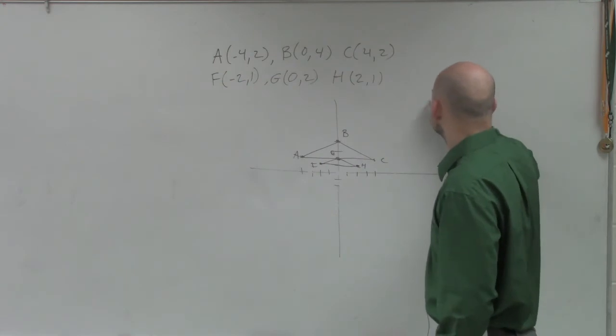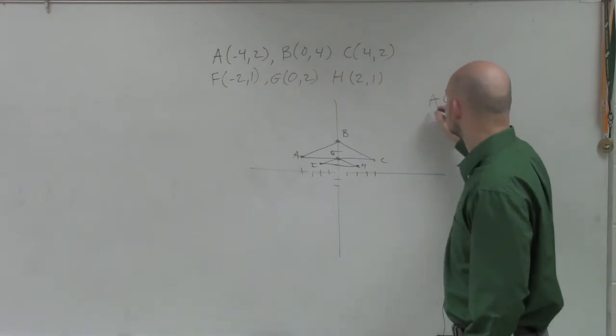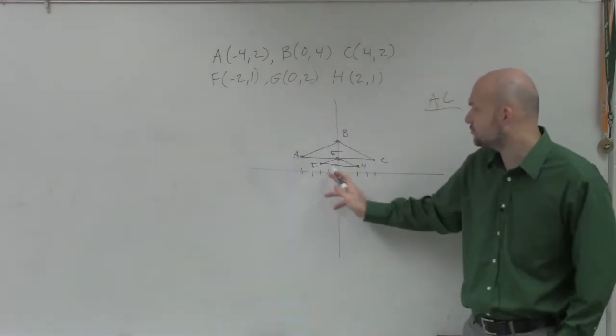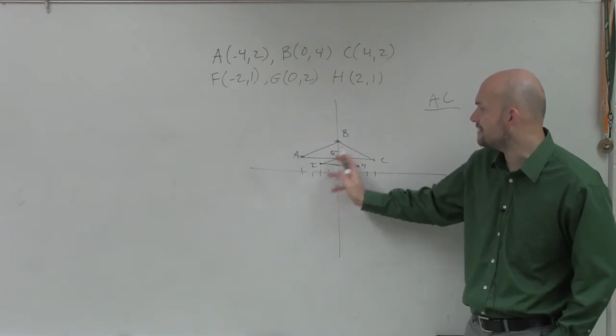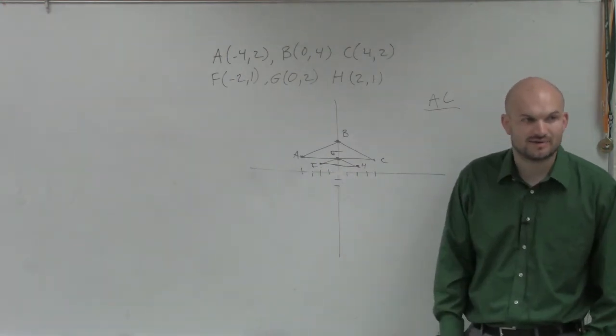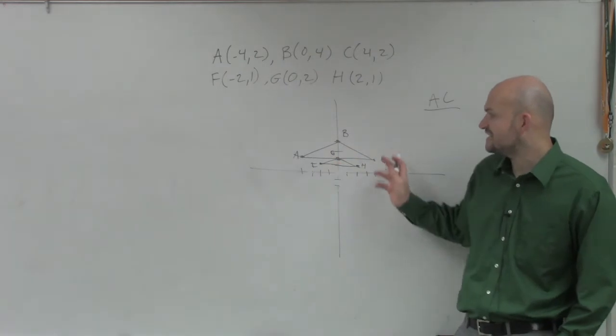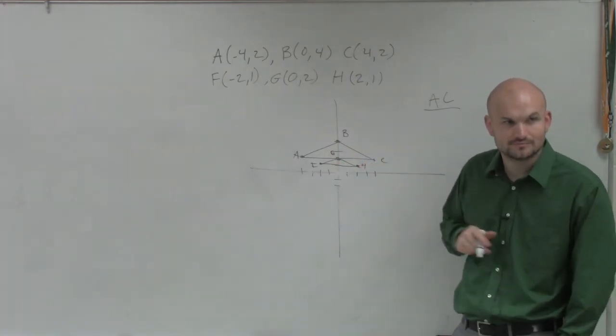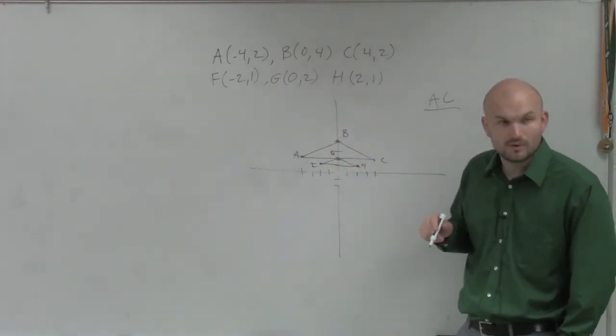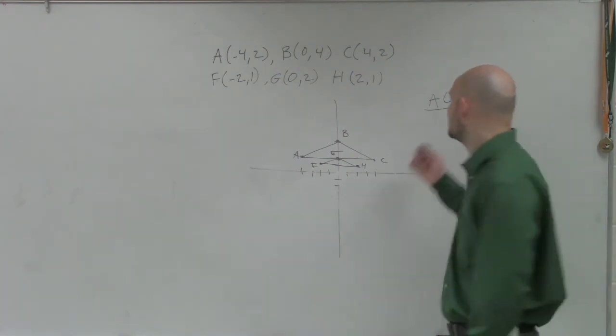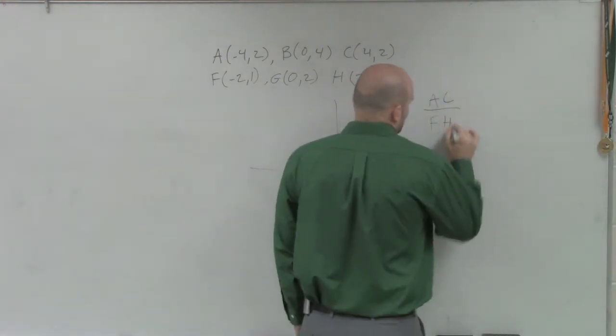Now, actually, let's do this. So AC is corresponding to what side length in this triangle, FGH? Elizabeth, what is AC corresponding to in this triangle? F. F to where? F to where? F to H. F to H. Does that make sense?